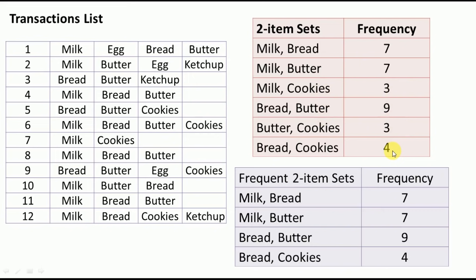We then determine frequent two-itemsets by checking the minimum support threshold. Milk-cookies and butter-cookies each appear only 3 times, giving 25 percent support, which fails the threshold. The four valid frequent two-itemsets are: milk-bread (7), milk-butter (7), bread-butter (9), and bread-cookies (4).